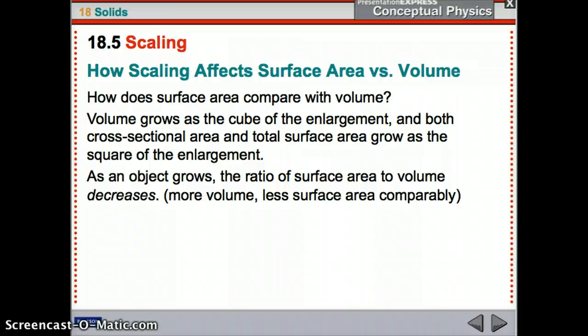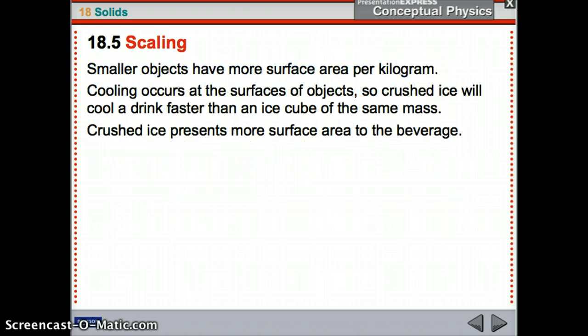How scaling affects surface area versus volume? So, how does surface area compare with volume? Volume goes up with the cube. Surface area grows up as the square. So, as something grows, it gets more volume faster than surface area. So, in the end, you're going to get more volume and less surface area. It will keep getting distance and distance and distance from each other. So, think of it this way. Smaller objects have more surface area per kilogram. Smaller, you get more surface area with a small amount of mass. Now, if you get a bigger object, you get less surface area per kilogram of mass. So, if you have cooling occurs at the surfaces, so if you have crushed ice, the same mass as an ice cube, the crushed ice will cool the drink faster than a single ice cube because the crushed ice has more surface area per kilogram than the ice cube does. Crushed ice has that more surface area to present.